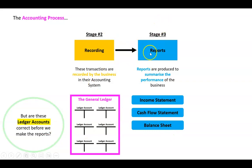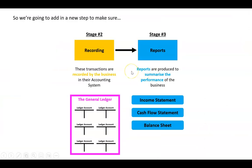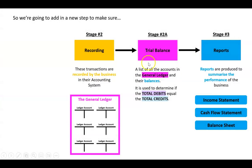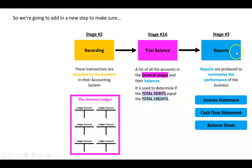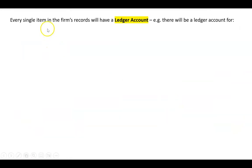We want to make sure these ledger accounts are correct before we even make the report. So whilst we're still at stage two, before we get to stage three, we're going to add a little step — call it stage 2a. After recording all transactions for the month, we do something called a trial balance. It's a list of all the accounts in the general ledger and their balances, used to determine if the total debits equal the total credits.